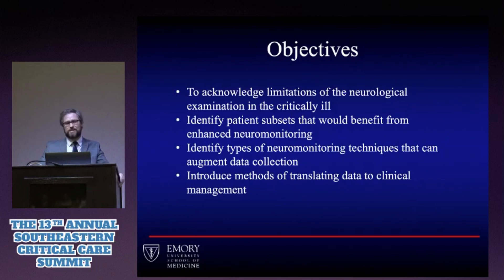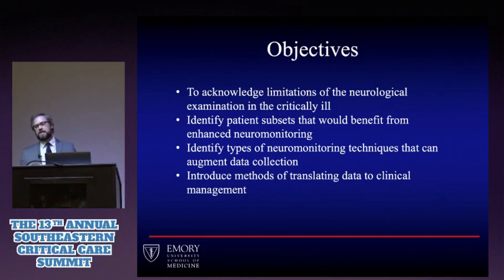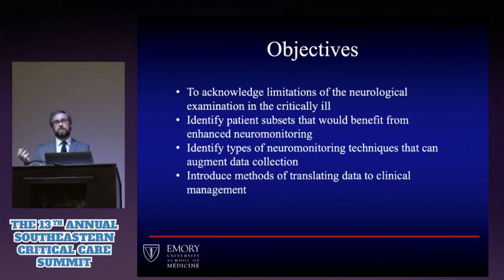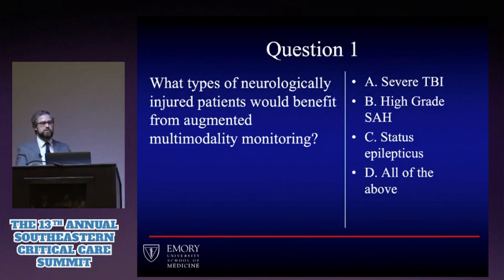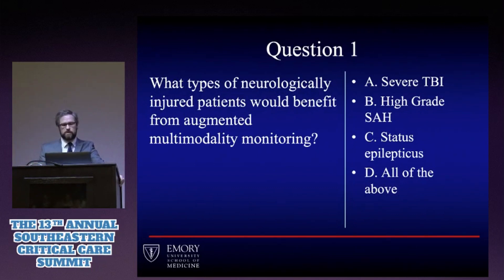Then we'll introduce what the next stage is — when you're putting together thousands of data points a second, how we take that and actually put it into a clinical context where we start to really help people. So question one: what types of neurological injury patients would benefit from augmented multimodality monitoring? Severe TBI, high grade subarachnoid hemorrhage, status epilepticus, or all of the above?